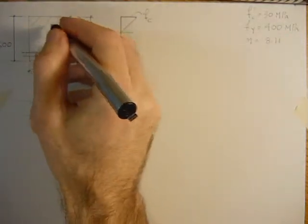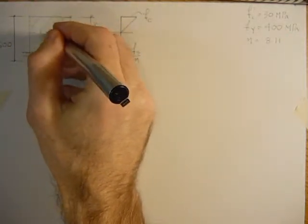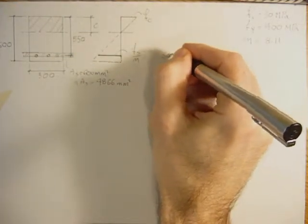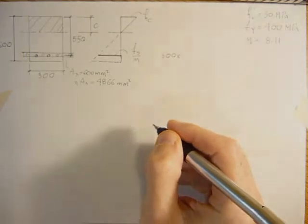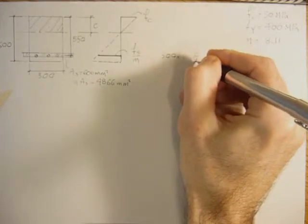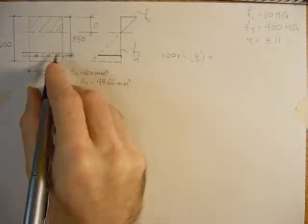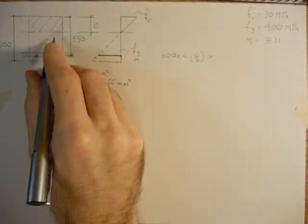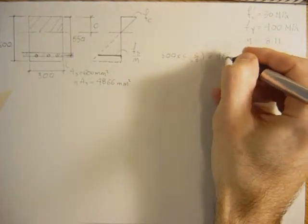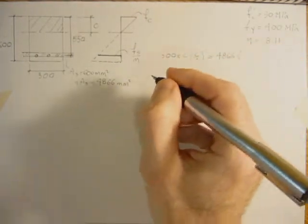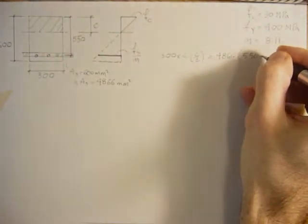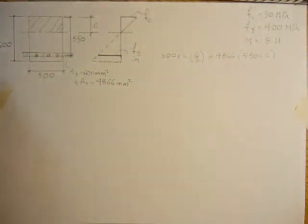So above we got this area times its centroidal distance. That's 300 times C times C over 2 equals the area of the transformed section below, and that's 4866 millimeters squared times D, 550 minus C.